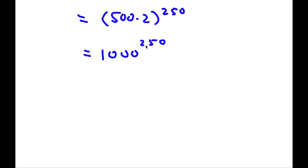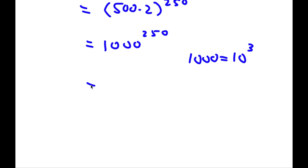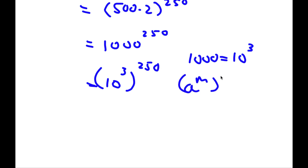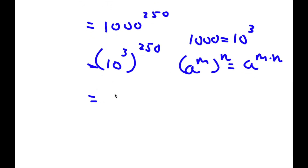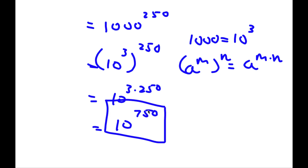Now we can simplify this a little further. 1,000 is the same as 10 to the power of 3, so I have 10 to the power of 3 to the power of 250. Using the property a to the power of m to the power of n equals a to the power of m times n, that gives 10 to the power of 3 times 250. And 3 times 250 is 750, so my answer is 10 to the power of 750.